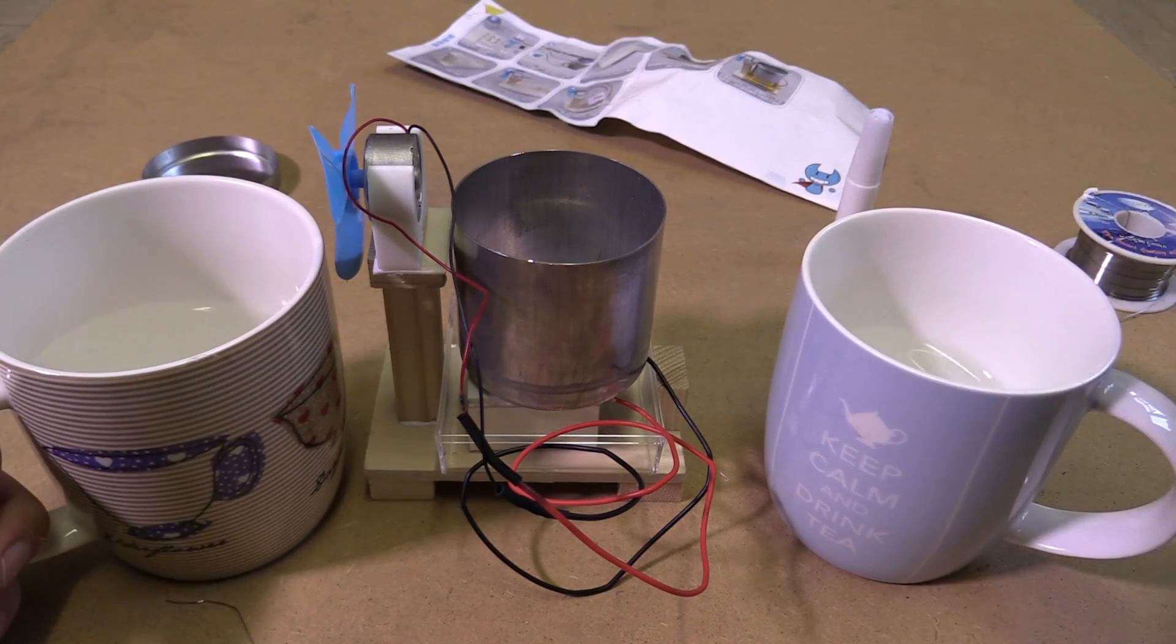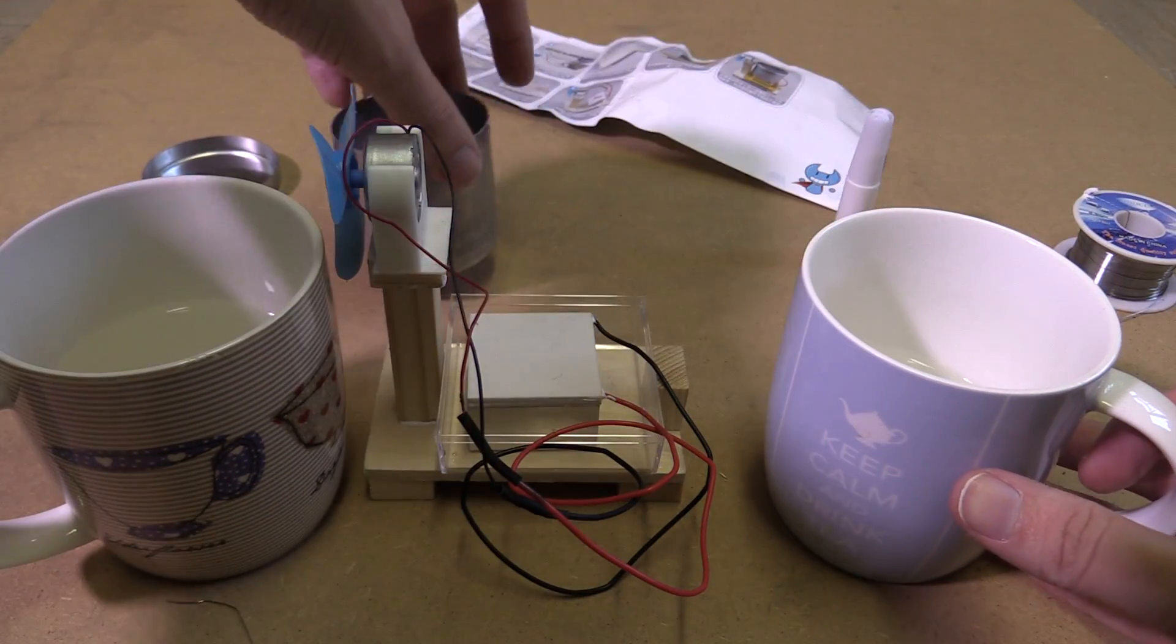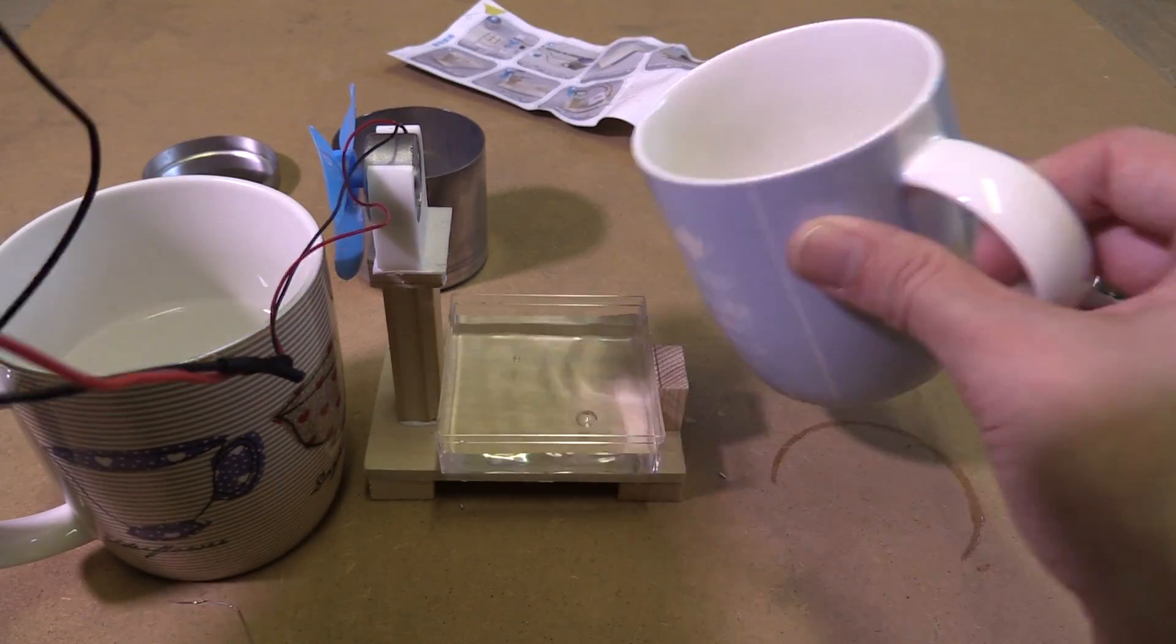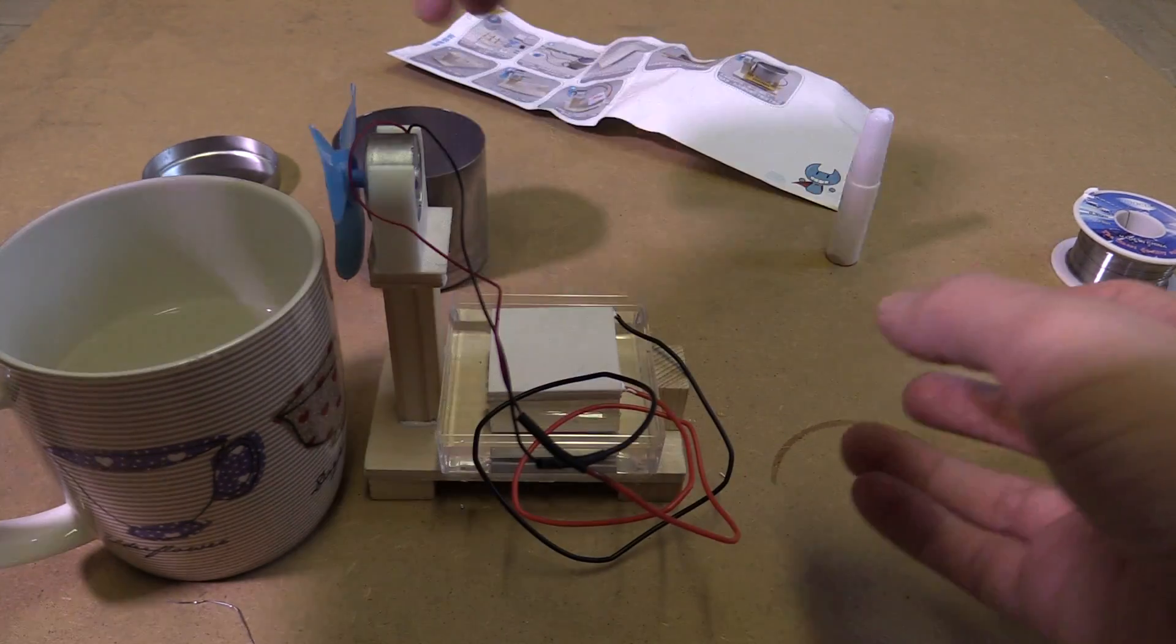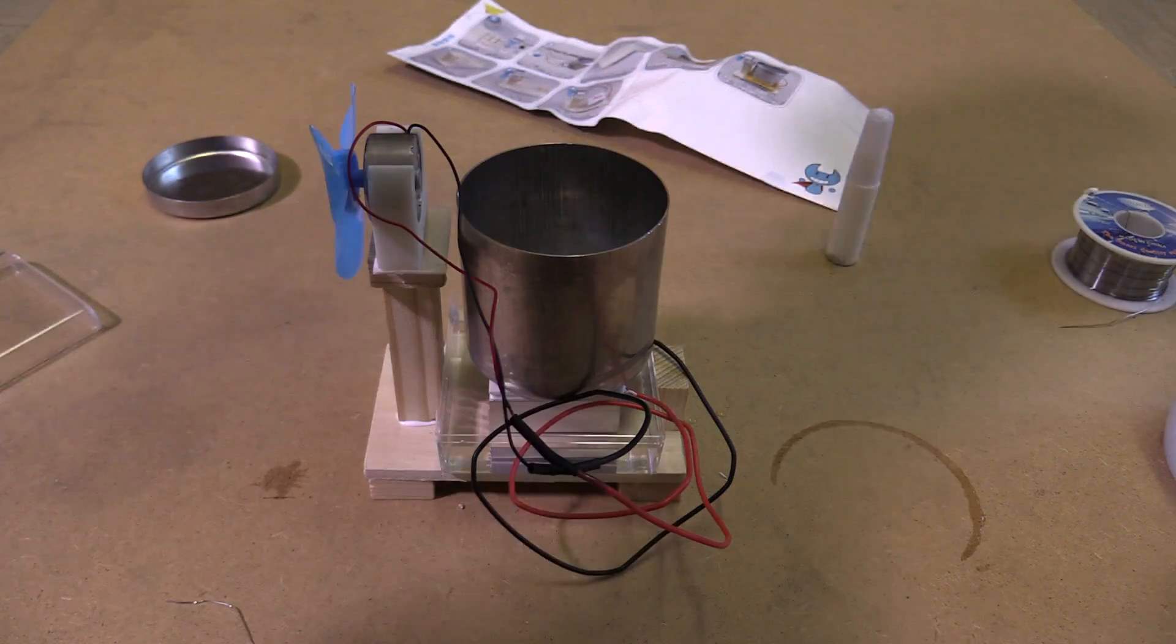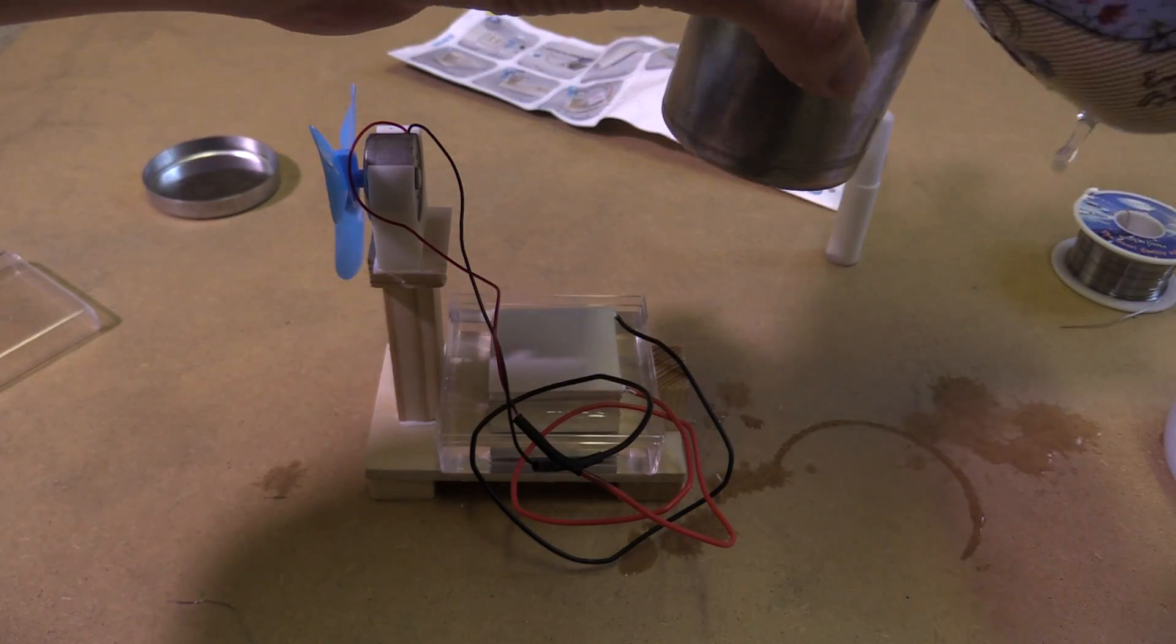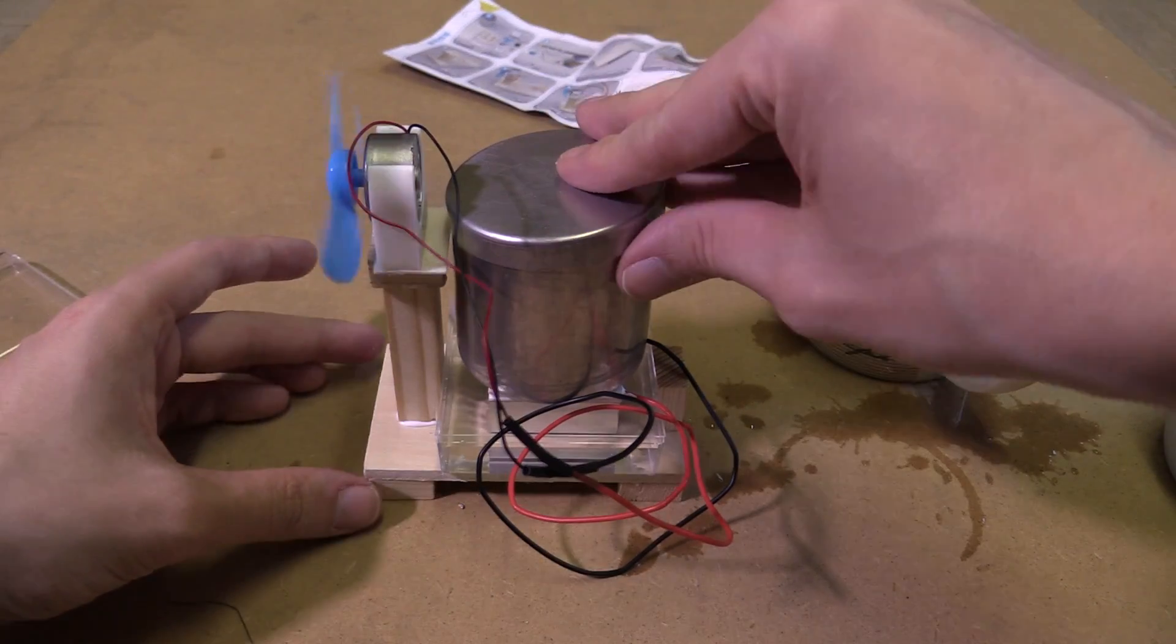So I've got two mugs here. This one has cold water, this one has very hot water. So let's start by putting the cold water in this bottom section and then put the Peltier module in there. Then we'll sit this tin on top and we'll put the hot water in there. Ouchie that's hot. Okay then put the lid on.